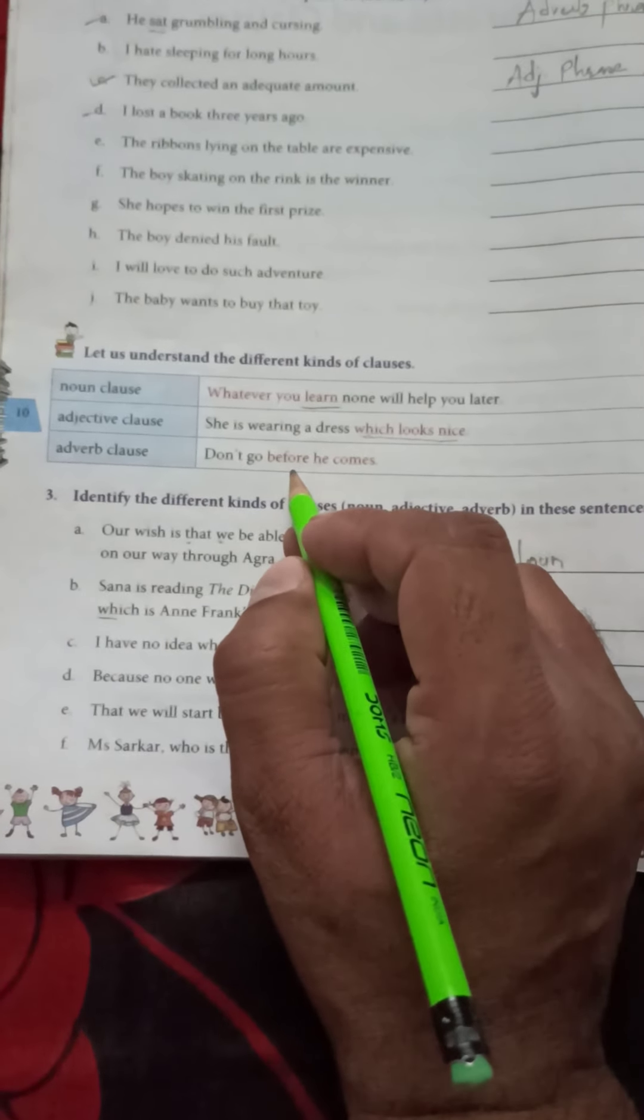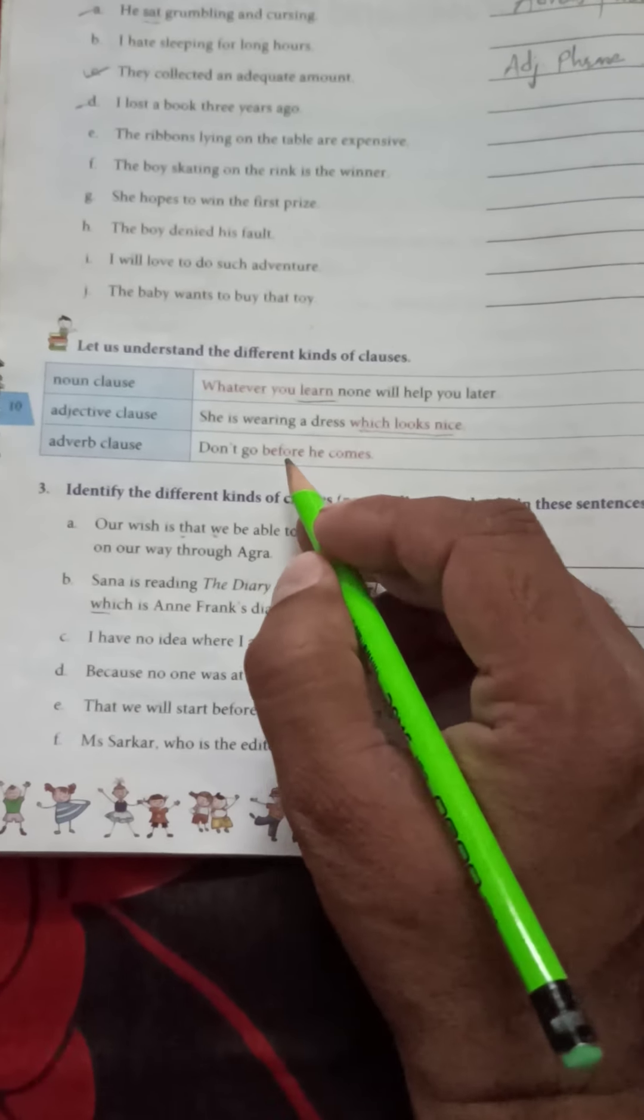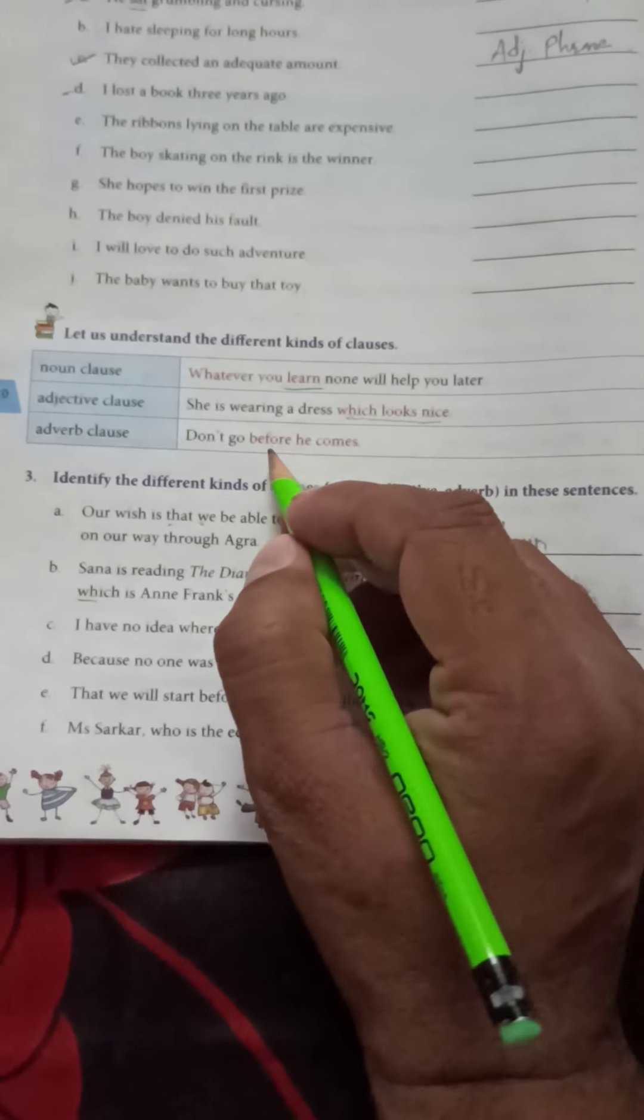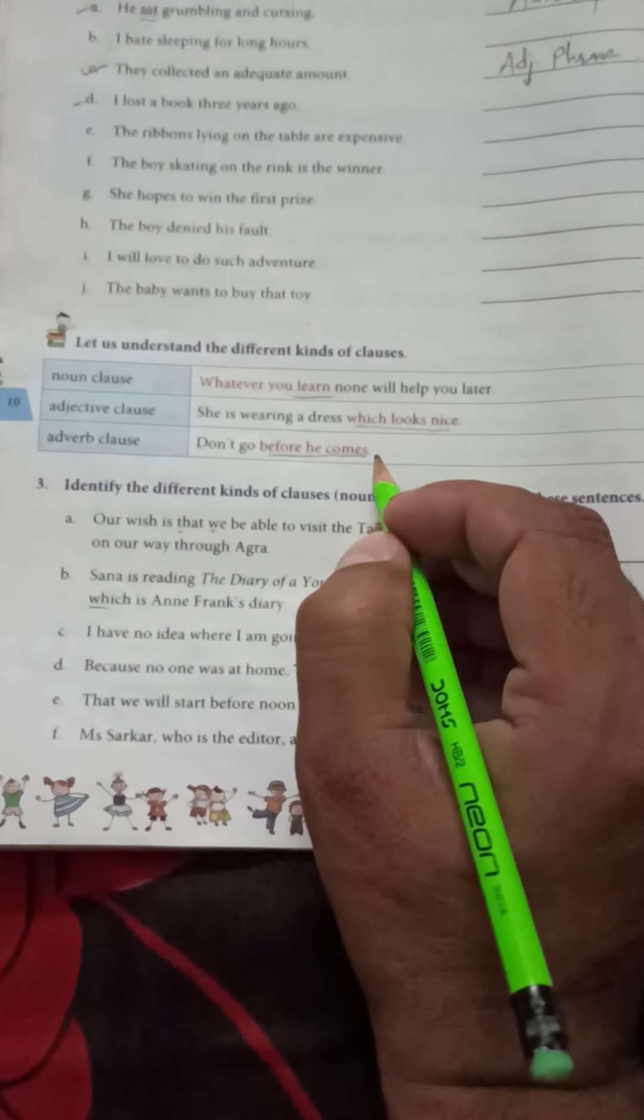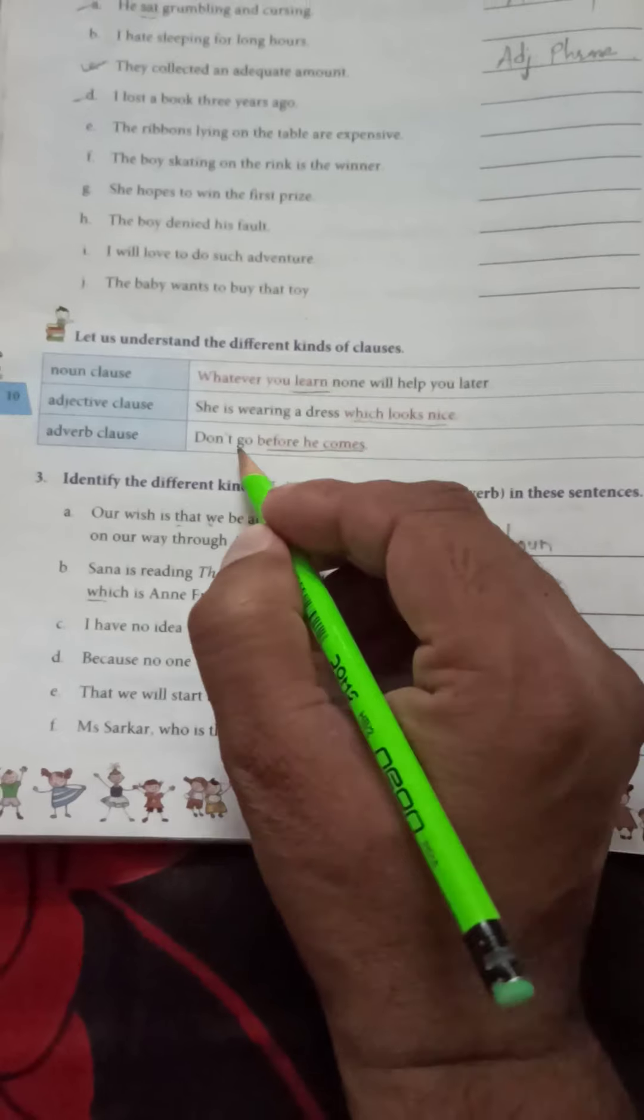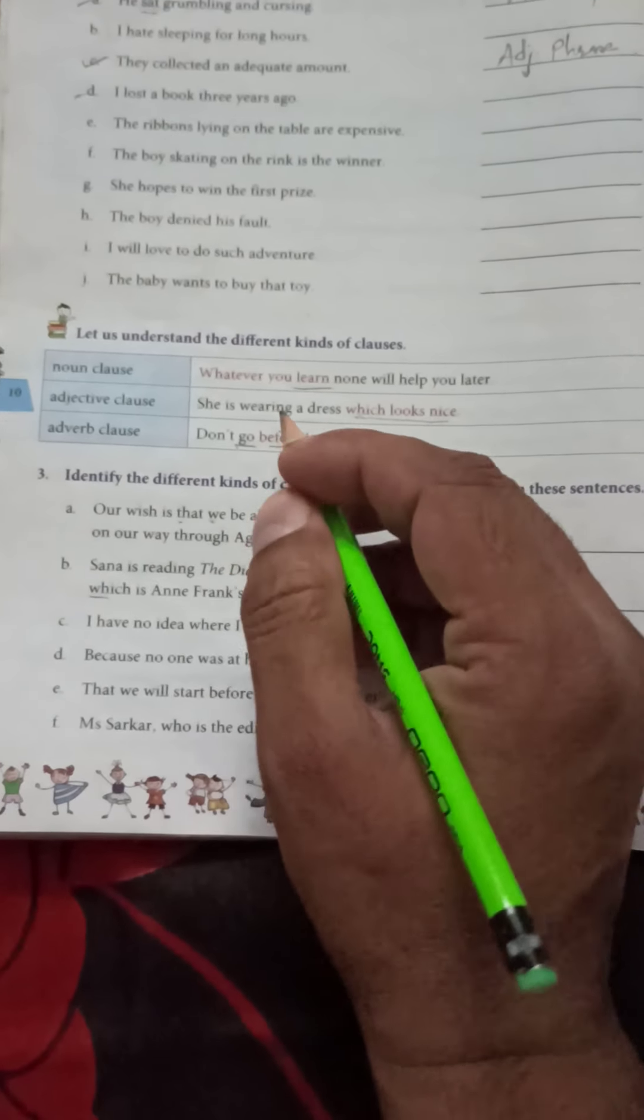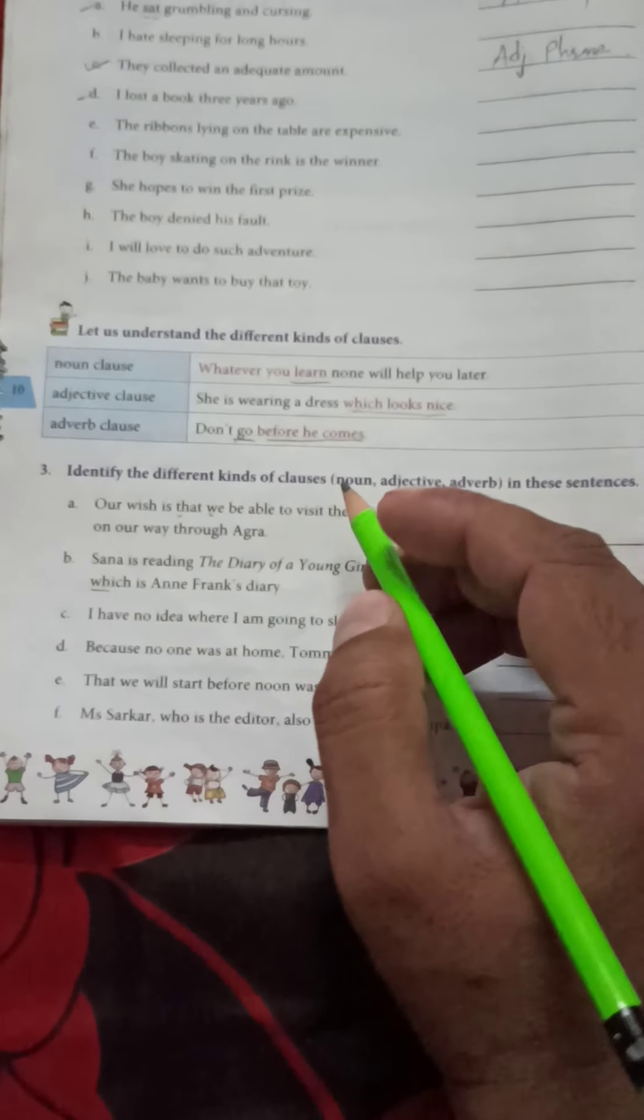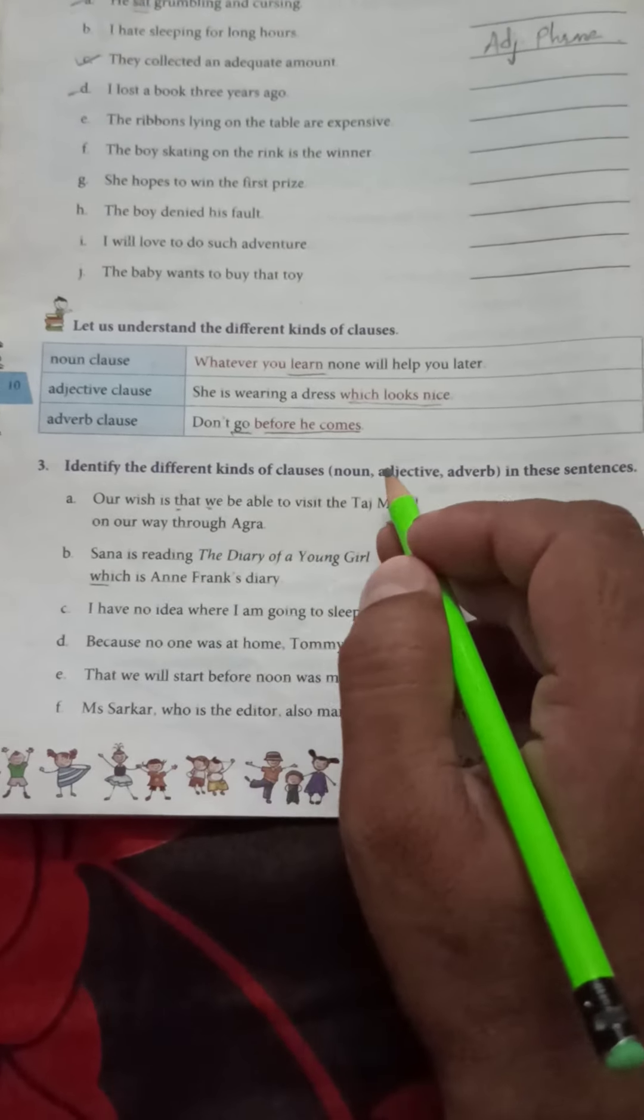Here 'before he comes' is adverb clause because it modifies the meaning of verb 'go'. So it is adverb clause. Here is exercise: identify the different kinds of clause - noun, adjective, adverb - in these sentences.